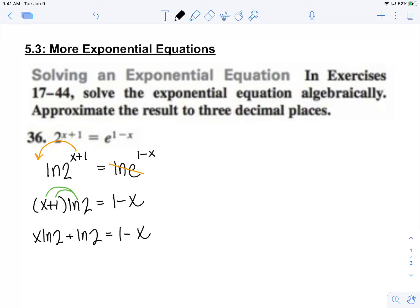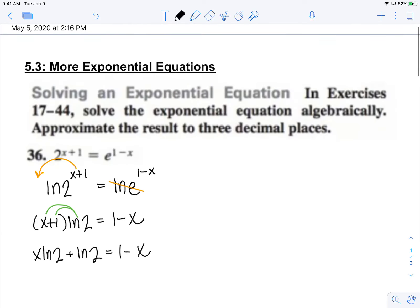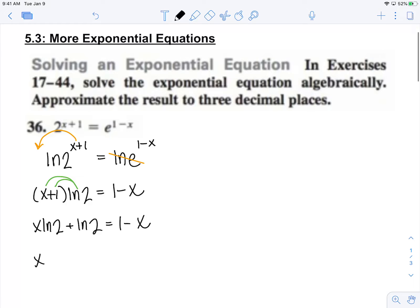Now anything with x I'm going to move to the left and anything without x I'm going to move to the right. So that'll make me have x ln 2 plus x equals 1 minus ln of 2.